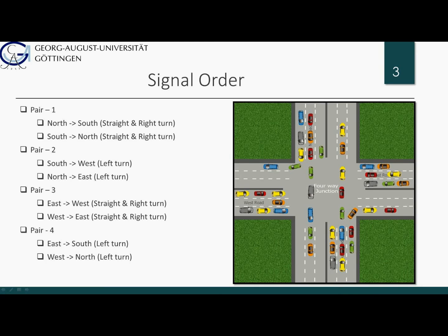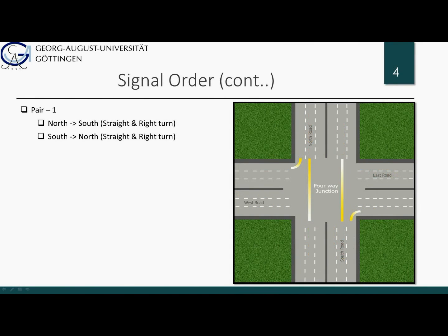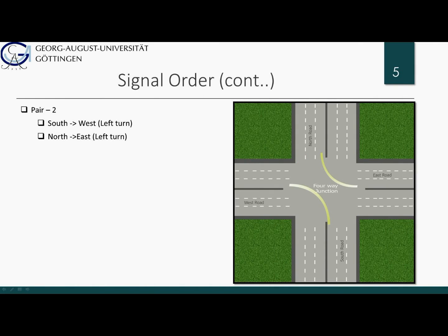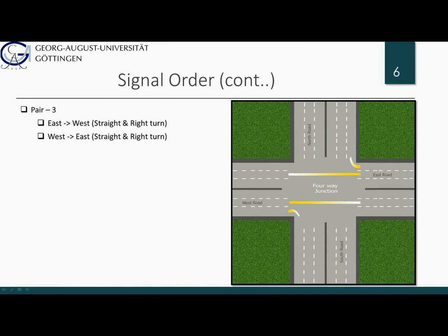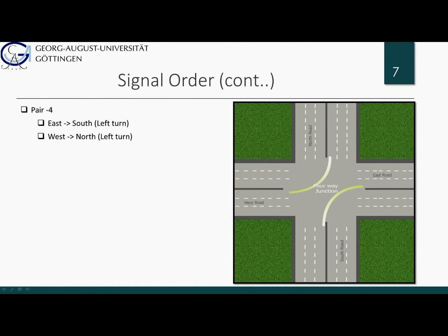Now I am going to discuss the signal order we have considered in our application. We have considered four different signal combinations. In the first combination, when the signal turns on, all vehicles from north to south and south to north will start passing — we call this straight pass — and also vehicles from north to west and south to east will start passing, which we call right pass. In the second pair, vehicles from south to west and north to east will start passing, which we call left passing. In signal pair 3, all vehicles from east to west and vice versa will pass through, and also vehicles from east to north and west to south. In the last signal pair, vehicles from east to south and west to north will start passing.